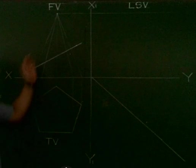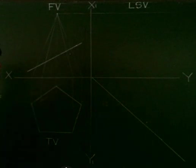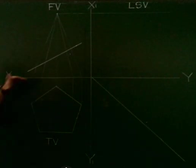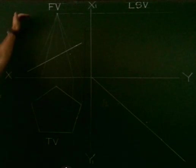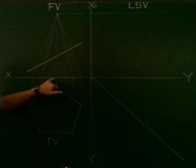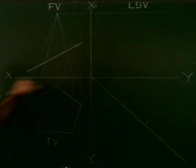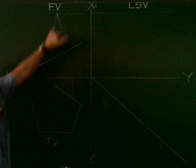Once we've projected all the information up to the front view, we're going to find what the apex or the axis height is. In this case, if it was 70 or 60 millimeters, you'll take it from the ground line, which is your XY axis, all the way up to the apex.